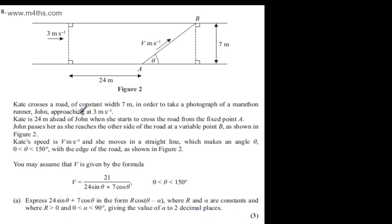Kate is 24 metres ahead of John when she starts to cross the road from a fixed point A. John passes it as she reaches the other side of the road at a variable point B, as shown in figure 2. Kate's speed is v metres per second and she moves in a straight line which makes an angle theta where theta is between 0 and 150 degrees with the edge of the road as shown in figure 2.